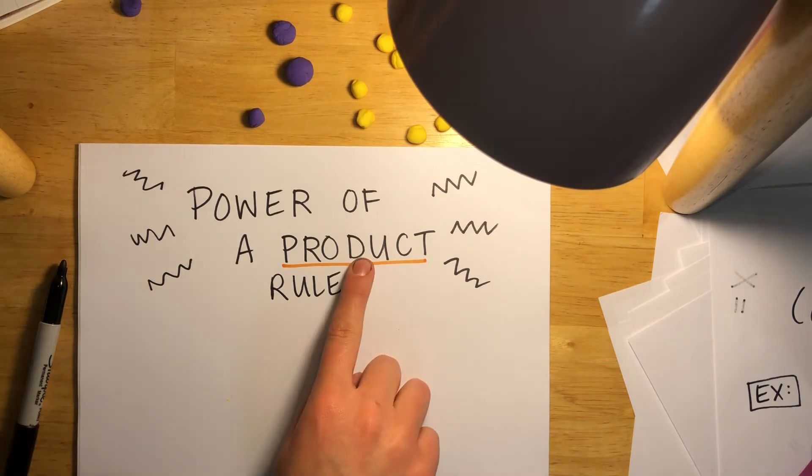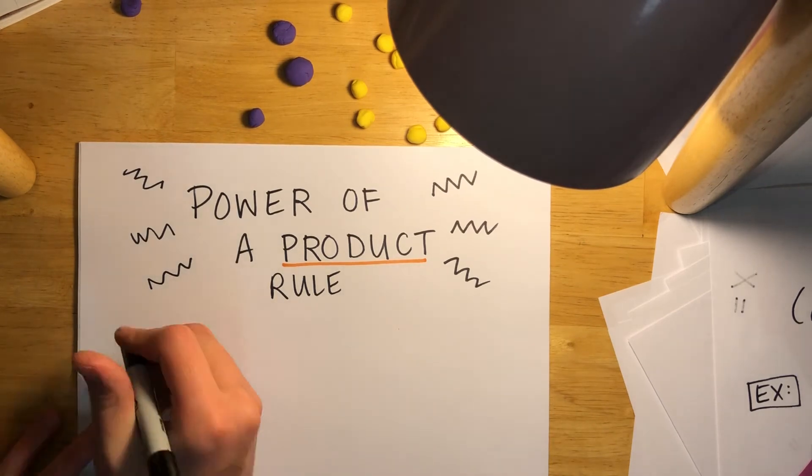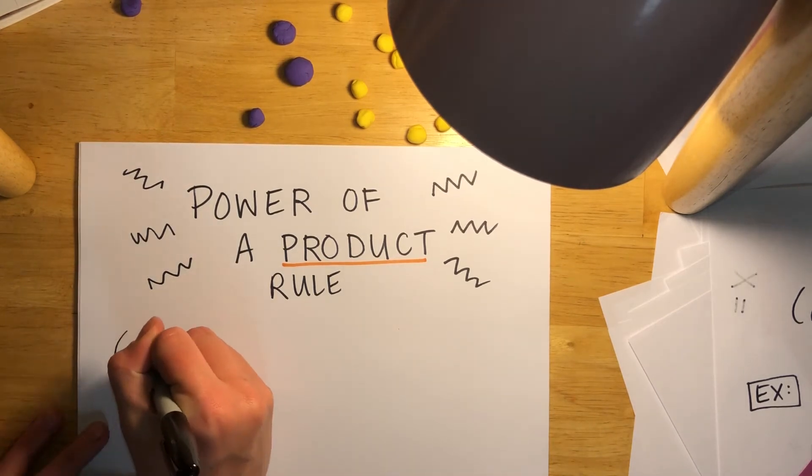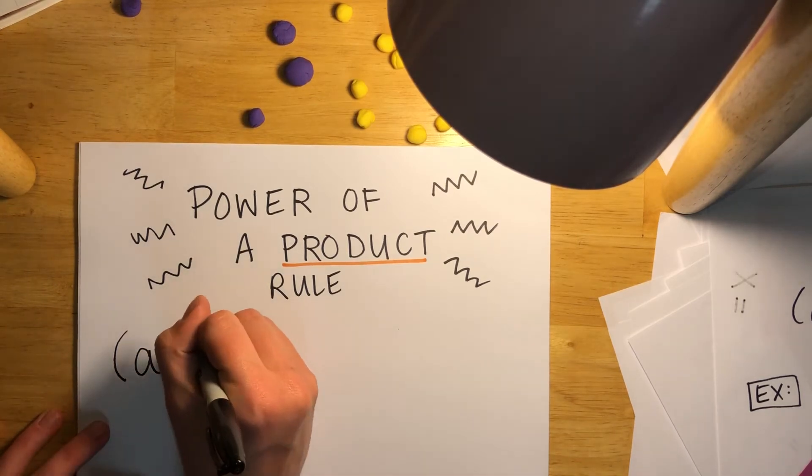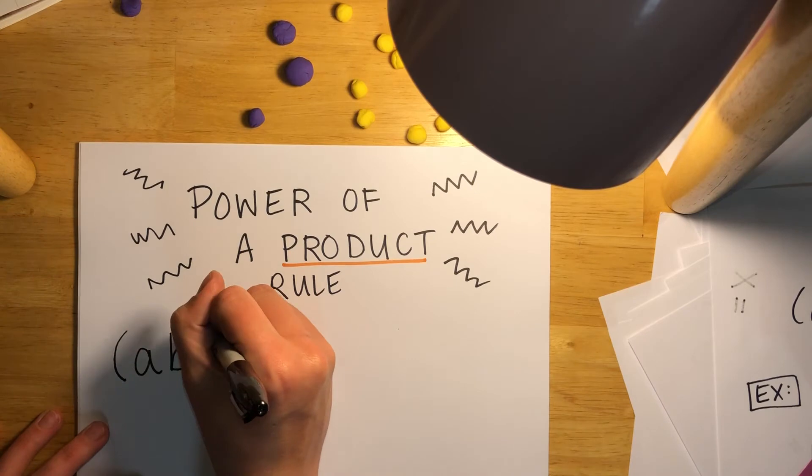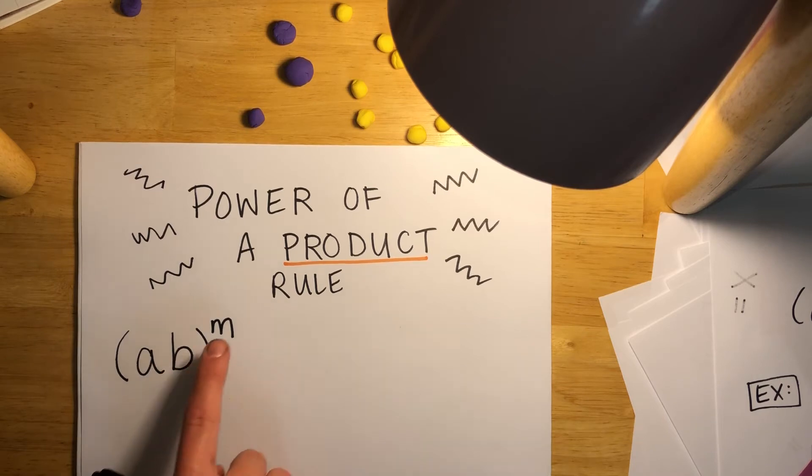So, two things are multiplied together and then there's a power around it. In general, what that looks like, let's say we have a times b to the power of m. This is our product, a times b, and then we have our power of m.